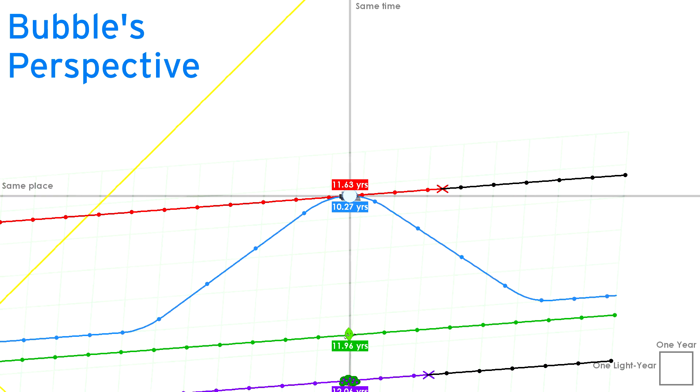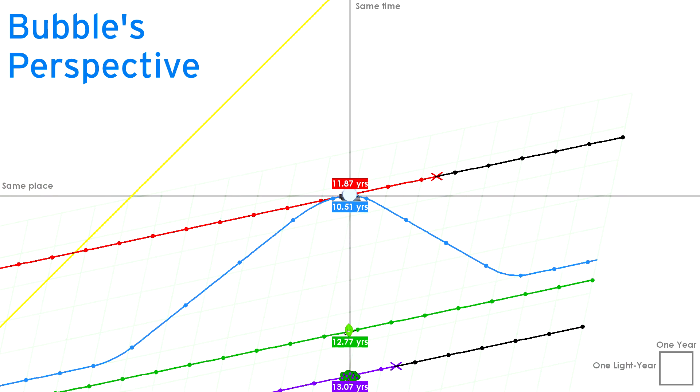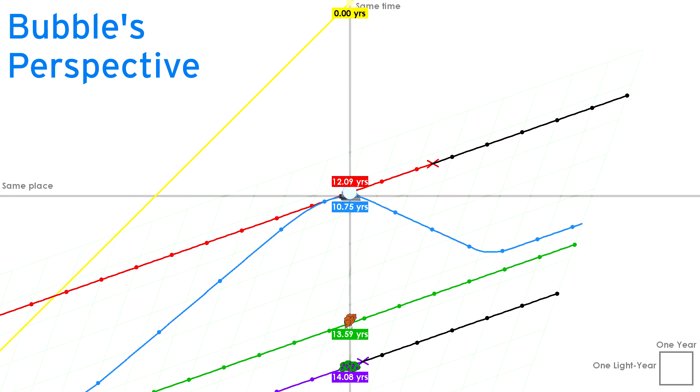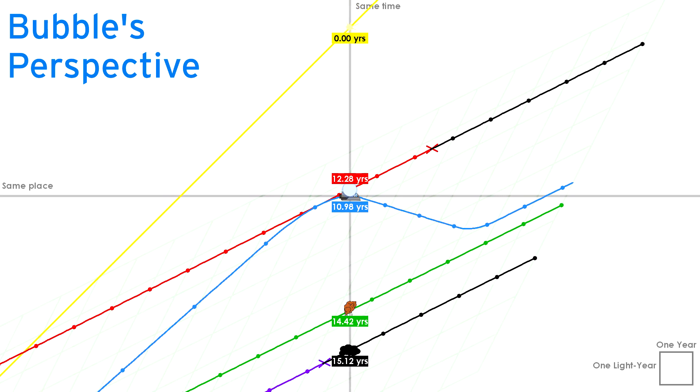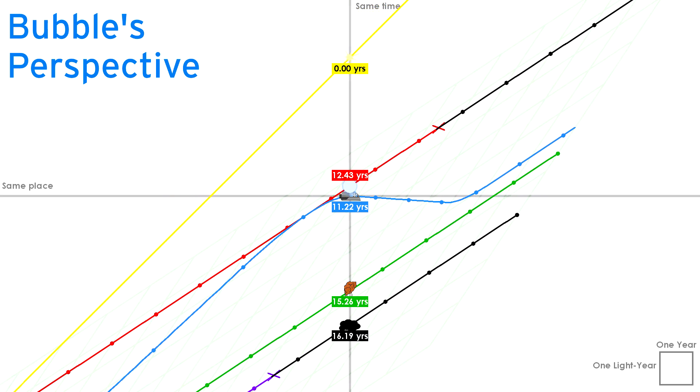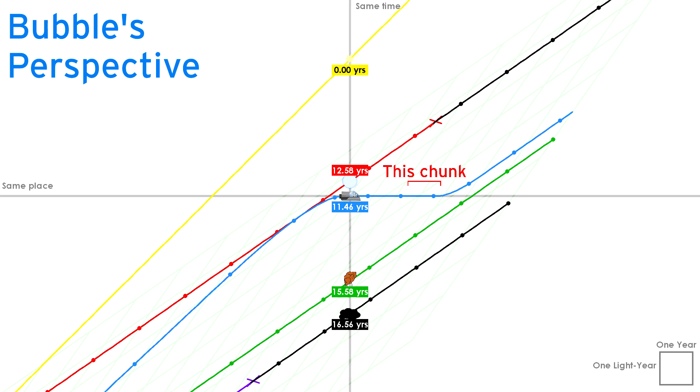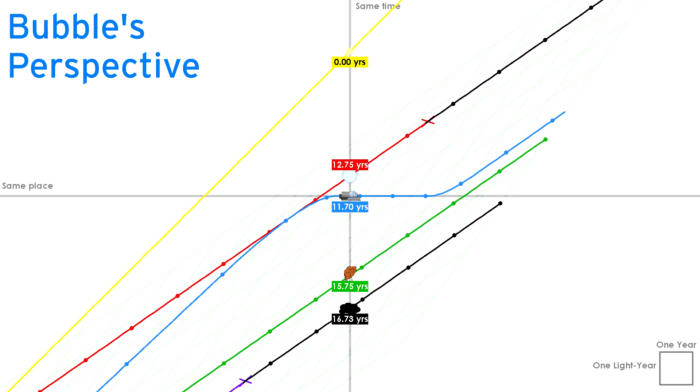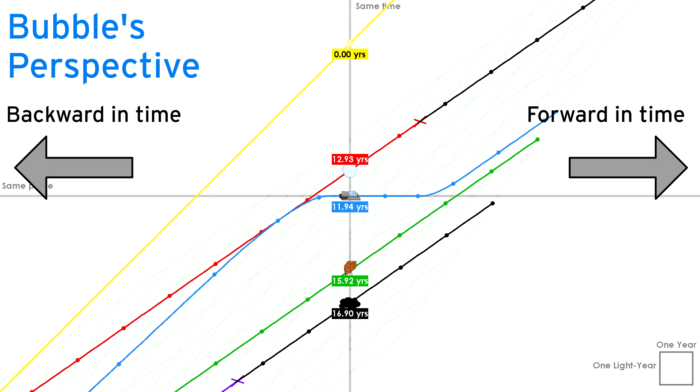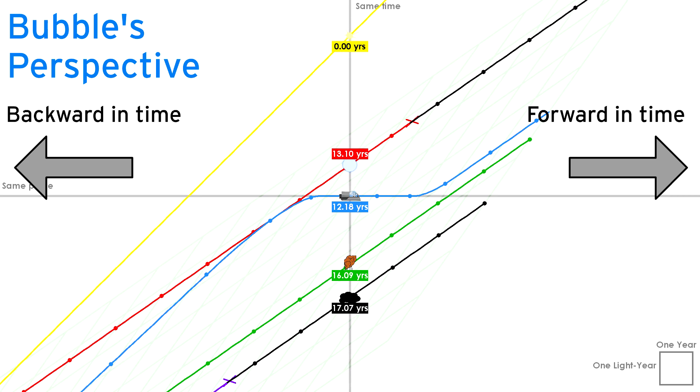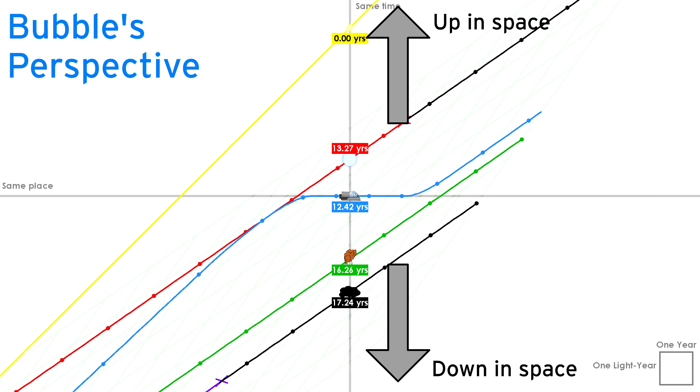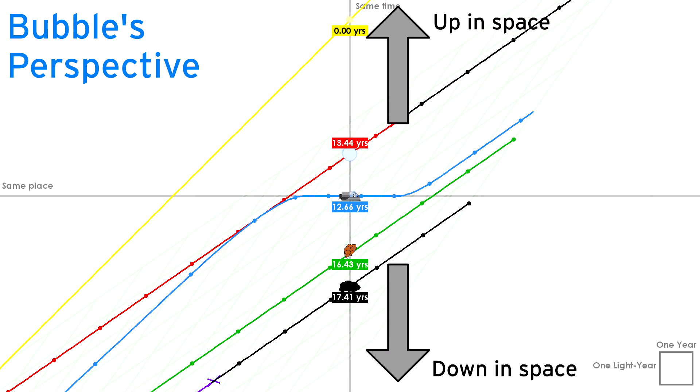But for Bubble, time must contract quite a bit for the transformation to still work. Even with the spacetime graph twisting and turning, she still can age one year only when she travels this chunk forward in time. Remember, even from this perspective, pure left and right are still forwards and backwards in time in the same place. And pure up and down are up and down in space, but at the same time.